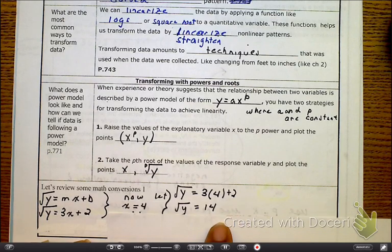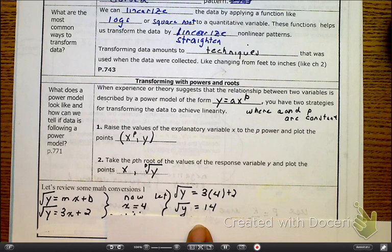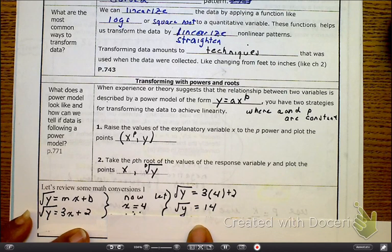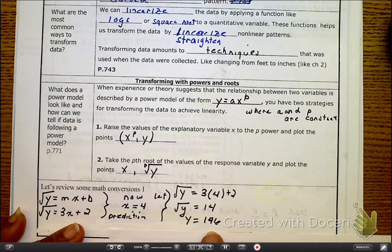You take it, plug it in, you see that y is going to equal 14. How do you solve for y? What's the opposite, or inverse I should say, of a square root? You square it, and then you're going to get 196.